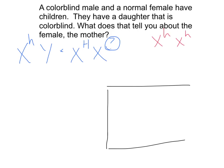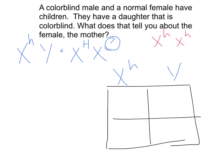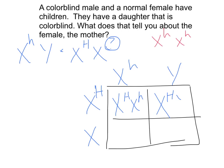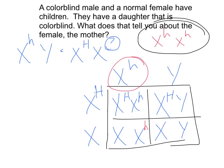Setting up the Punnett square with the father's gametes along the top, the mother has at least one dominant allele and another X — we just don't know if it's dominant or recessive. We can see they could have a daughter that is a carrier or a male that has the trait. What we do know is that dad can only pass on the recessive allele (X little h) to his daughter. So for them to have a colorblind daughter, mom also needs to be able to pass on a recessive allele (little h). That tells us that mom is a carrier.